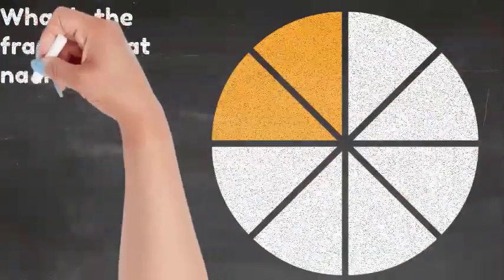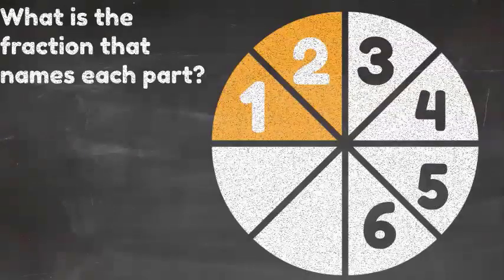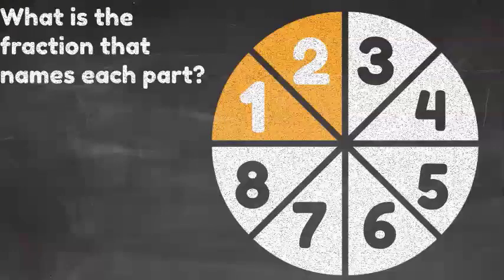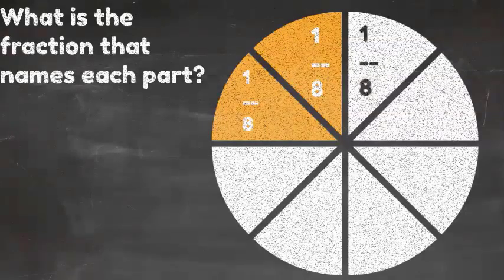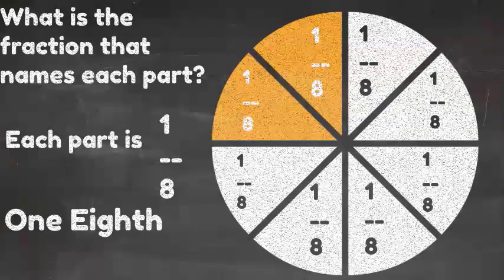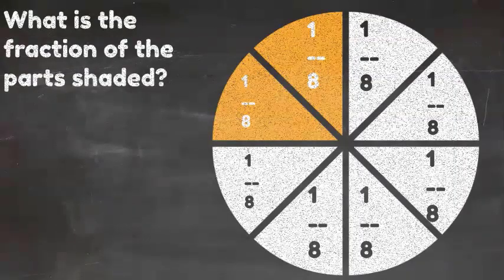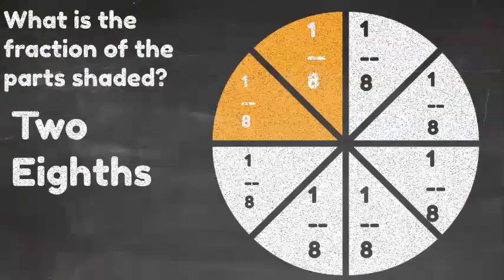What is the fraction that names each part? Well, there is a total of eight parts this time, so each part would be one-eighth. So each part is one-eighth. It's one as the numerator, eight as the denominator. But the parts that are shaded now, they are two-eighths shaded. So we write it two as the numerator, eight as the denominator.